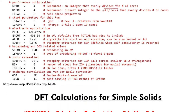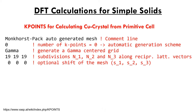The next file is the KPOINTS file. The first line is a comment describing the type of k-point mesh you're using. The second line selects how to generate the mesh — a value of zero means an automatic mesh will be generated by VASP. The third line designates the mode of k-point generation; a very common mode is the Monkhorst-Pack scheme centered on the gamma point, which is the center of the Brillouin zone. The final line specifies any additional offset for moving the k-point mesh away from the gamma point.